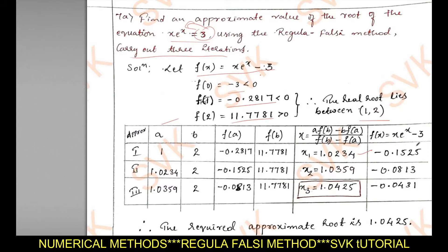Substituting x₁ into f(x) gives −0.1525. Since f(x) is negative, look at the f(a) and f(b) columns — f(a) is negative and f(b) is positive. Wherever we have the negative value, replace it with the new value. So in the second row, f(a) becomes −0.1525 and correspondingly a becomes x₁ = 1.0234, while b and f(b) are retained.